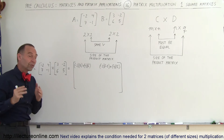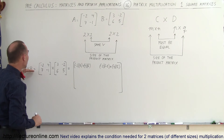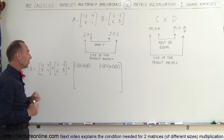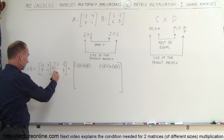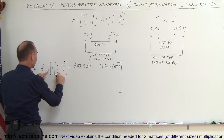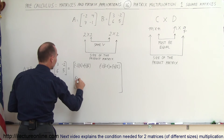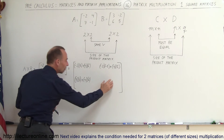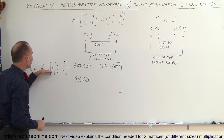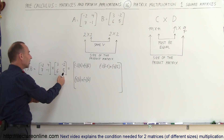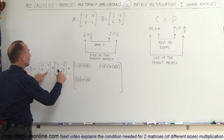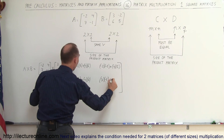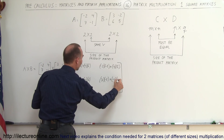Now moving down to C21, we take the second row of the first matrix and the first column of the second matrix, giving us 7 times 3 plus negative 1 times 6. And finally for C22, we multiply the second row of the first matrix times the second column of the second matrix, so 7 times negative 2 plus negative 1 times 5.